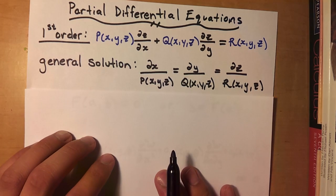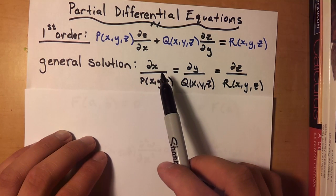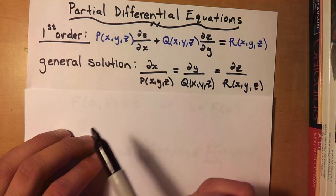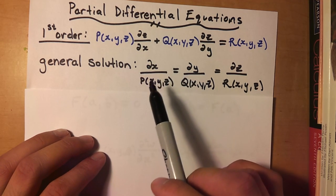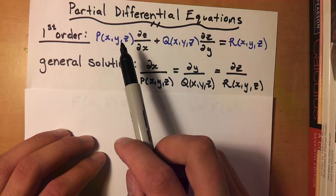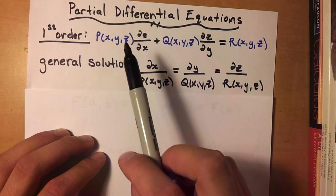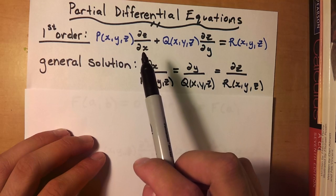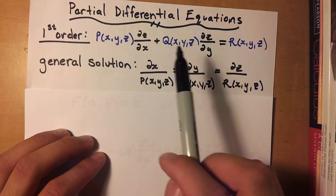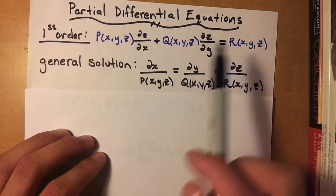Alright, so first thing we need to do is find an auxiliary system. Then we'll find the general solution after. So basically, where you find P, or how to find P, Q, and R, is basically dx corresponds to P, dy corresponds to Q, and then whatever's left is dz.